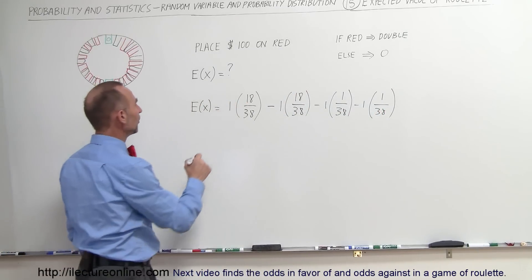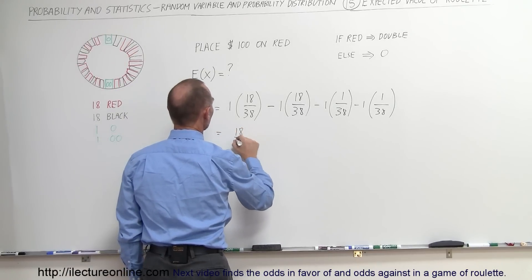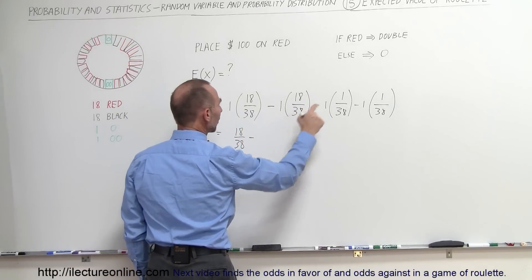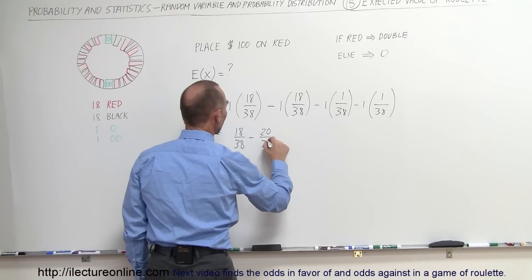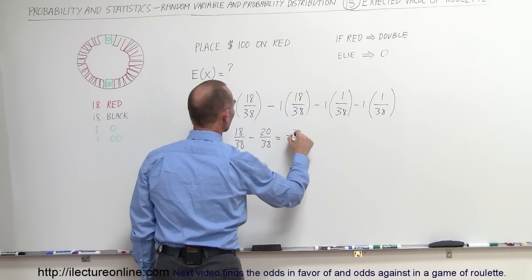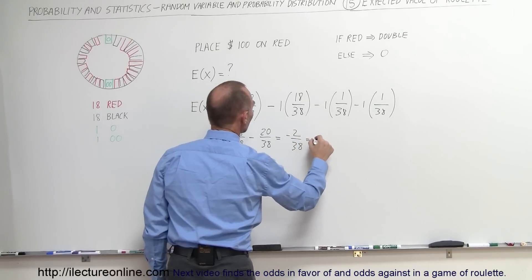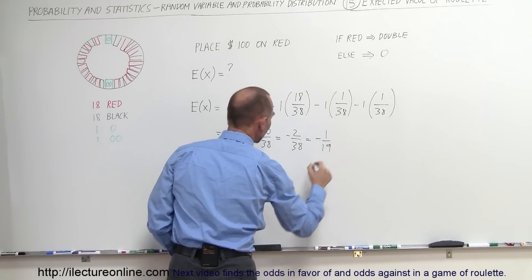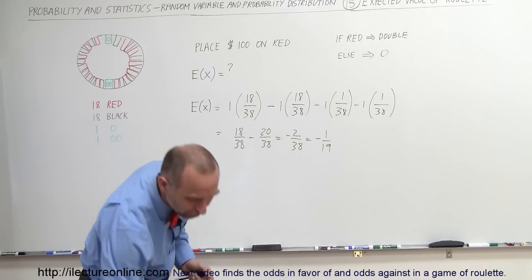Alright, let's simplify this so this is equal to 18 out of 38 minus that would be 20 out of 38 which is equal to minus 2 out of 38 which is minus 1 over 19. So let's put that into a decimal notation.